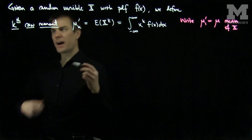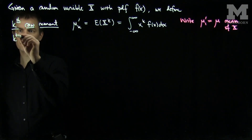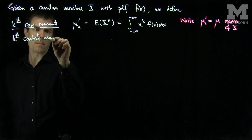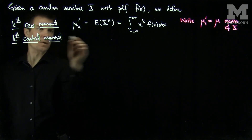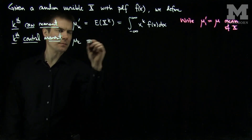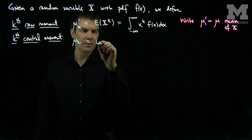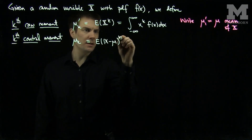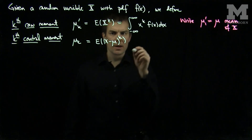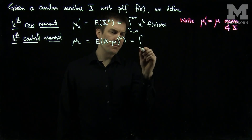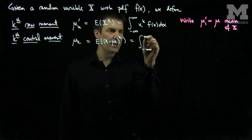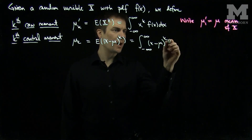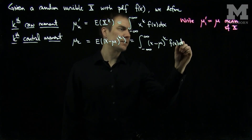Now we'll define the kth central moment as mu_k, and this will be the expected value of x minus the mean to the power k. Again we compute this with the pdf as the integral from negative infinity to infinity of x minus mu to the power k, f dx.